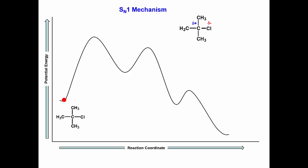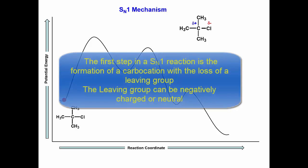The SN1 mechanism. The first step in an SN1 reaction is the formation of a carbocation and a leaving group. The leaving group can be negatively charged or neutral.